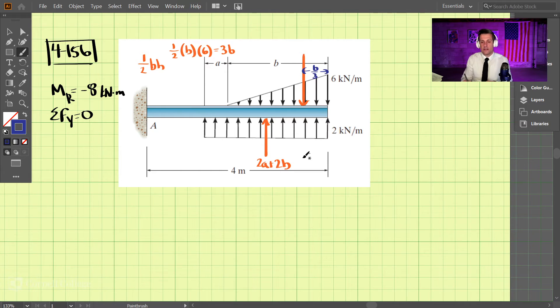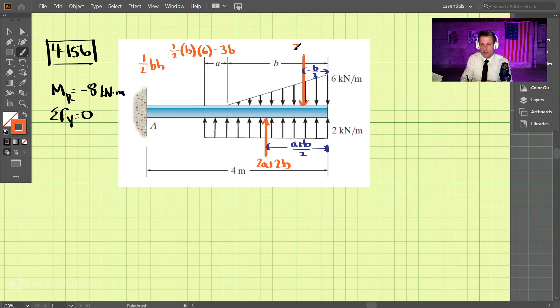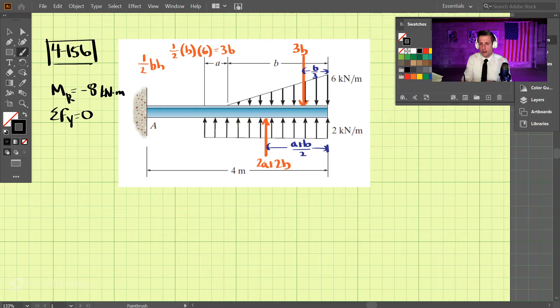We can write the distance for this one down here as (a + b) divided by two. If the total length of this triangular load is a plus b, we know that this distance is (a + b) divided by two. At the top, we have a downward force of 3b—that's the area. Now we can move on to our equilibrium equations.